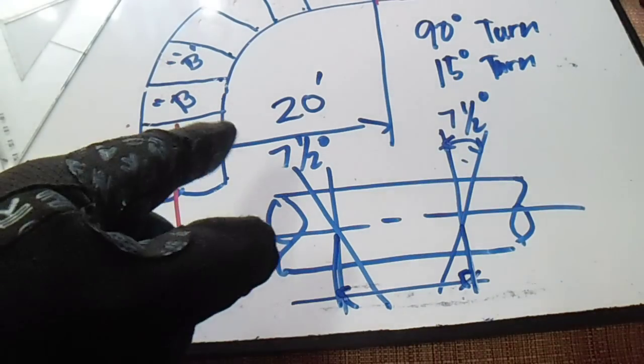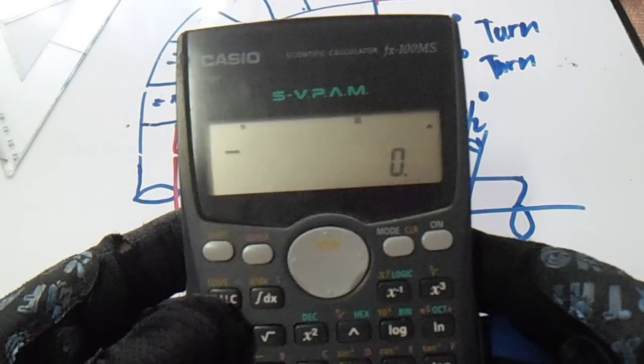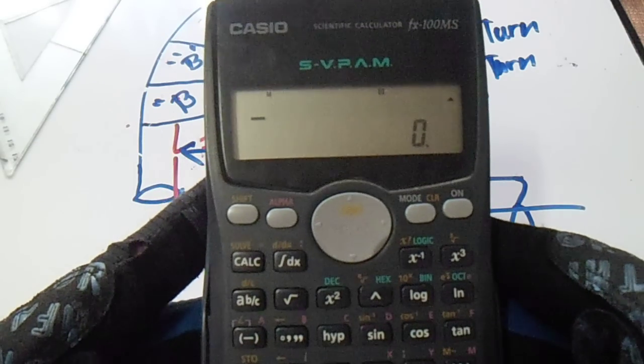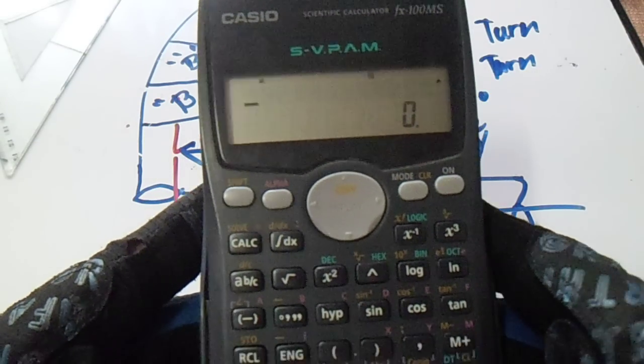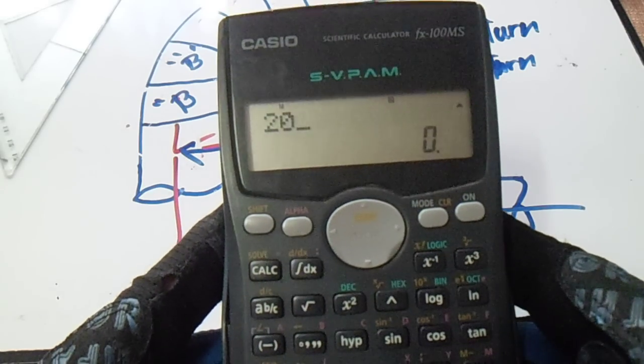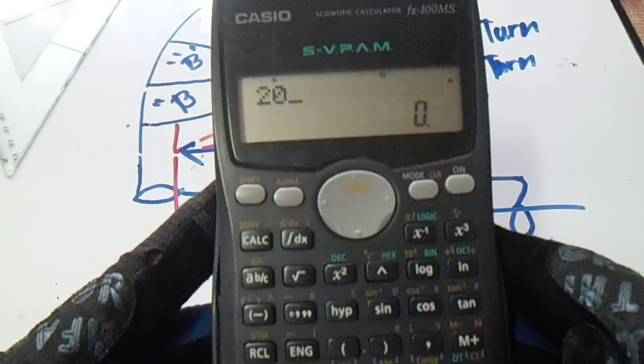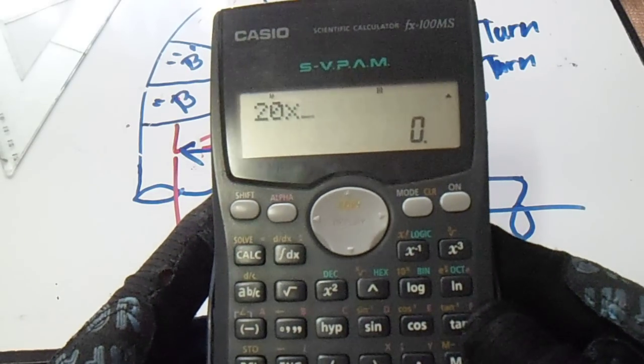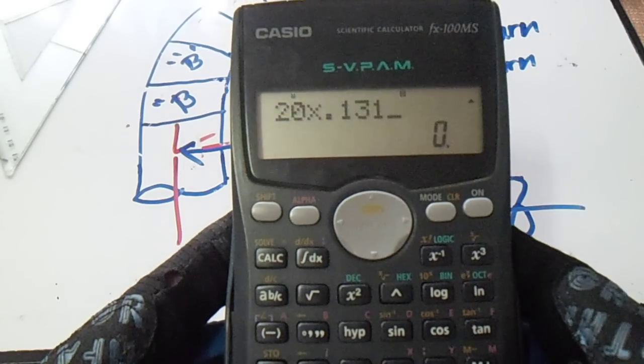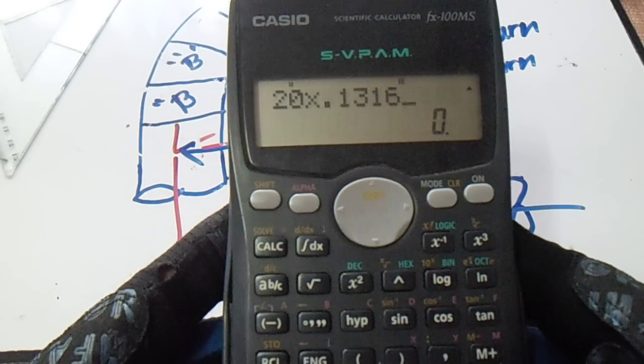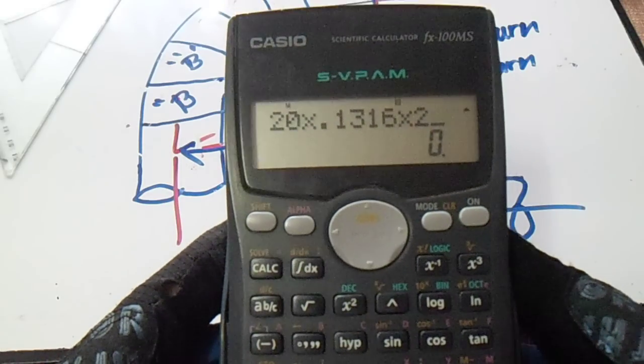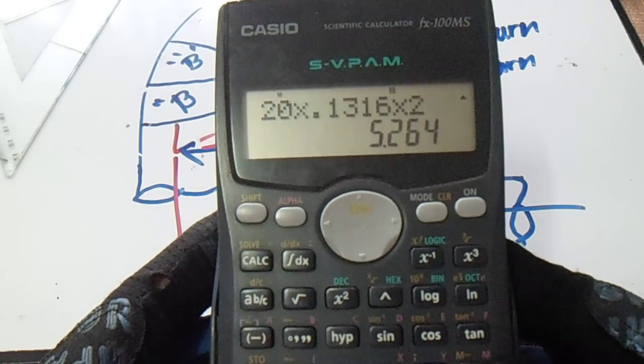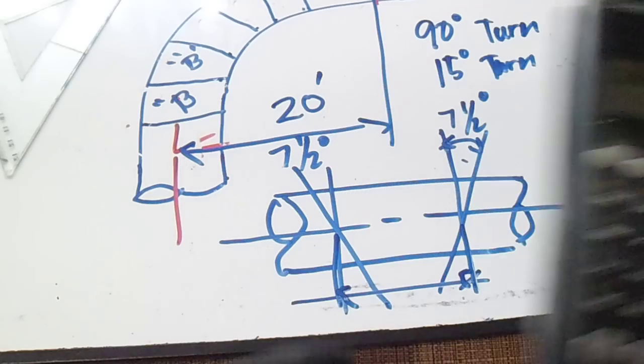To get the dimension from center to center for this 90 degrees with 20 feet radius: radius 20 multiplied by 0.1316, multiplied by 2, equals 5.264. This is dimension B.